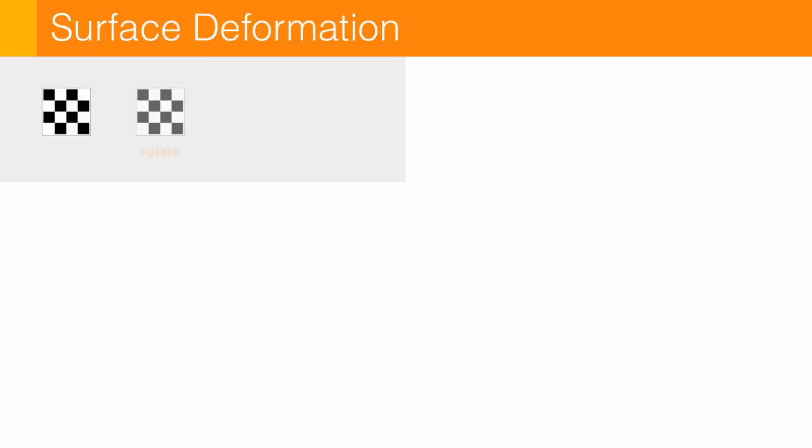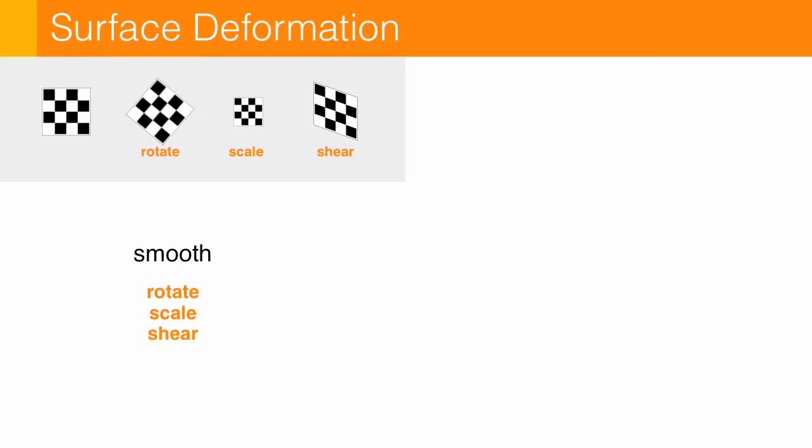And so a tangent plane can get rotated relative to its neighbors, it can be scaled locally, or it can get sheared. And so for an arbitrary smooth deformation, any of these things can happen. For a conformal map, we ask that there be no shearing, which is why, for instance, textures end up looking so nice.